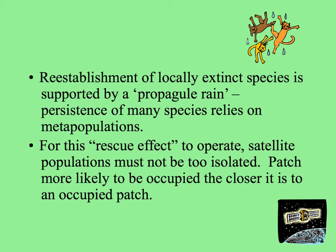If a species blinks off and becomes locally extinct, it might be reestablished by a propagule rain. The persistence of many species relies on metapopulations in habitat patches that are, for some reason, suboptimal but suitable. But for this rescue effect — the propagule rain recolonizing patches — to operate, the satellite populations can't be too far away.